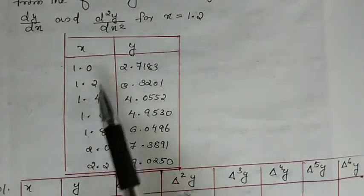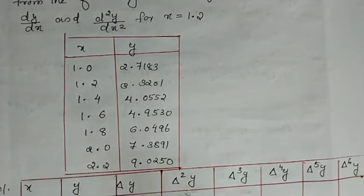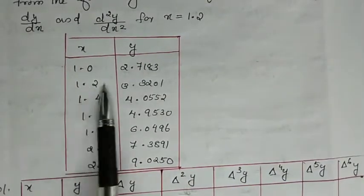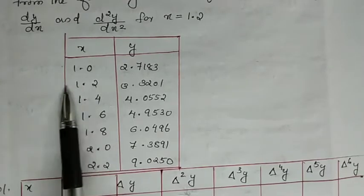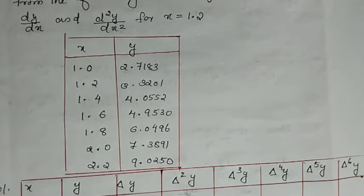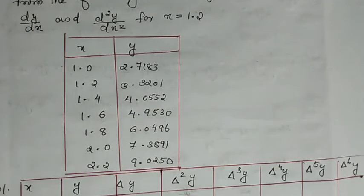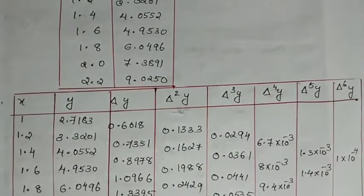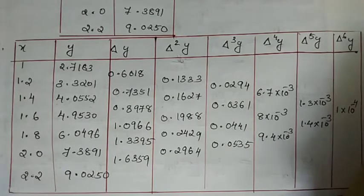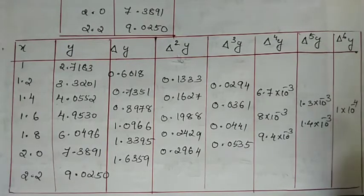The x values in the table are 1.0, 1.2, 1.4, 1.6, 1.8, 2.0, and 2.2. Since x values are equally spaced, we use Newton's formula. The required value x equals 1.2 is near the beginning of the table, so we use Newton's forward interpolation formula. We construct the forward difference table using the same method as the first chapter.